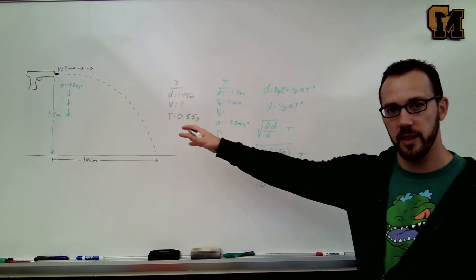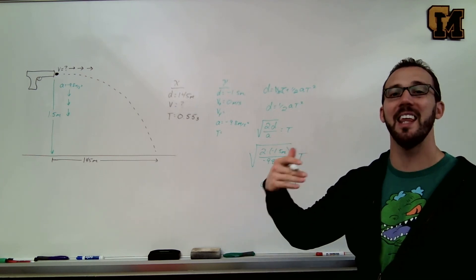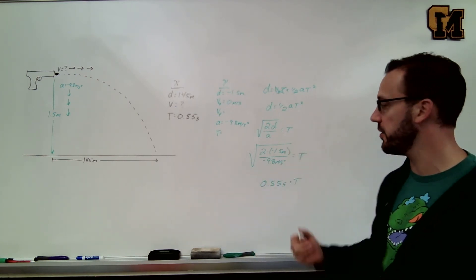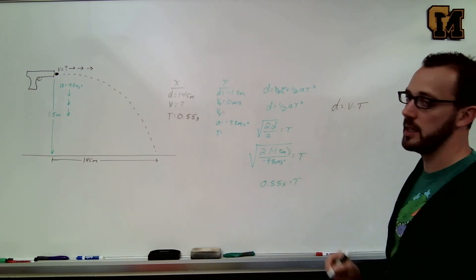Again, constant velocity motion in left and right motion for projectile motion. That means we only have one equation to pick from. It's our constant velocity equation, d equals v times t.